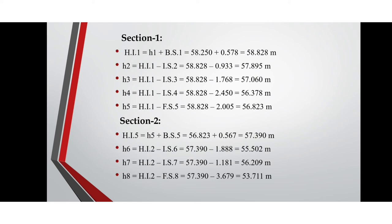Proceeding to section 2: the height of instrument for section 2 is calculated by adding h5 plus back sight 5, which equals 57.390 meters. h6 and h7 are calculated by subtracting the intermediate sight from the height of instrument. For calculating h8, we subtract the foresight from the height of instrument, which equals 53.711 meters.